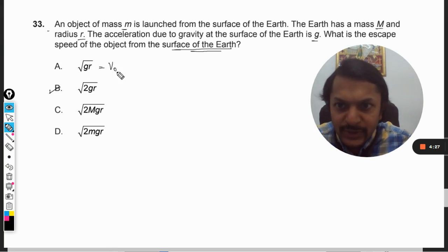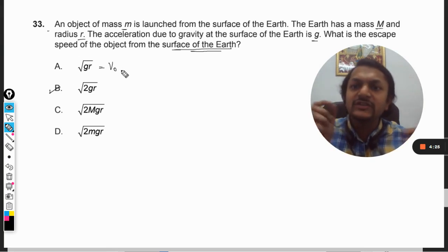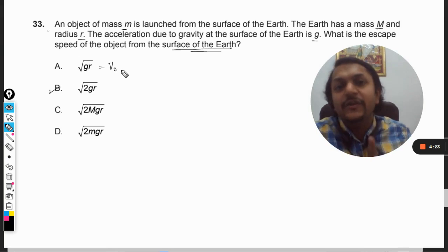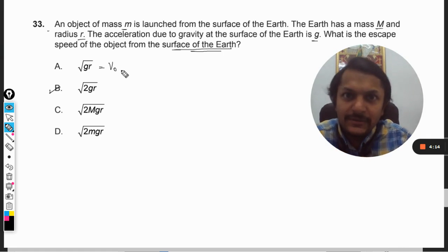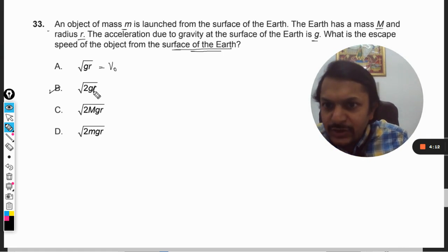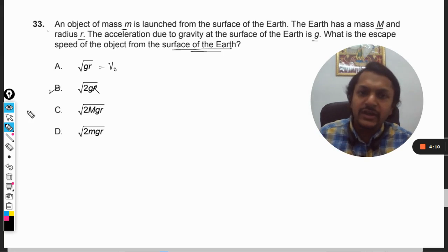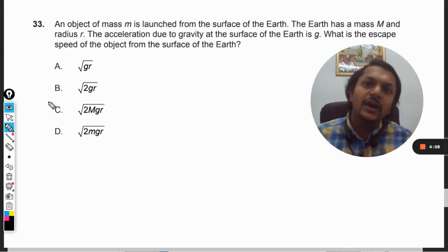The orbital speed is the speed of a satellite in some orbit which is r distance away from the center of the Earth, and root of 2gr is basically the escape speed. This r has to be capital R, that is the only difference. But anyways, we are now going to derive this thing.